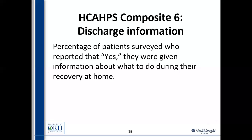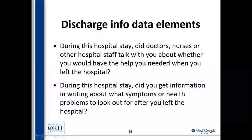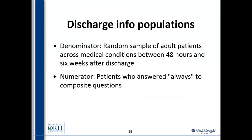For Composite 6, the denominator is a random sample of adult patients — no pediatric patients — who discharged out of your hospital. Those who expired within the hospital are not included in the measure. The survey contact happens between 48 hours and six weeks after discharge. For the numerator, it's the patients who answered 'always' — essentially a five on a Likert scale — to the composite questions. So you're looking for the percentage of folks who say this always happened.